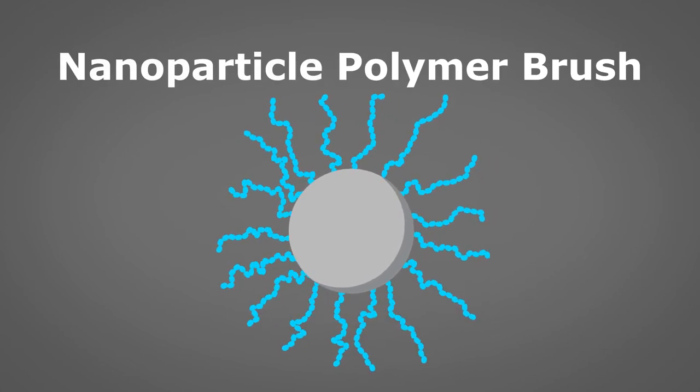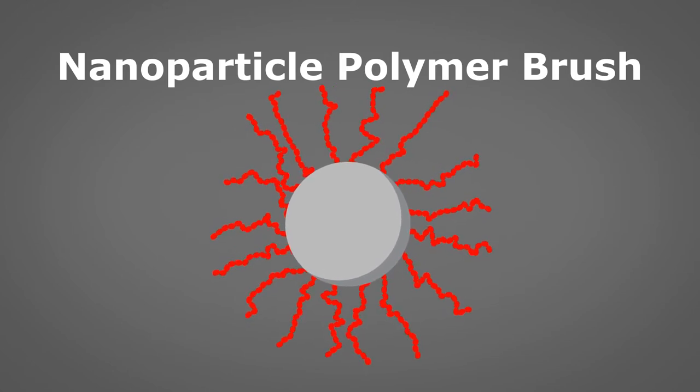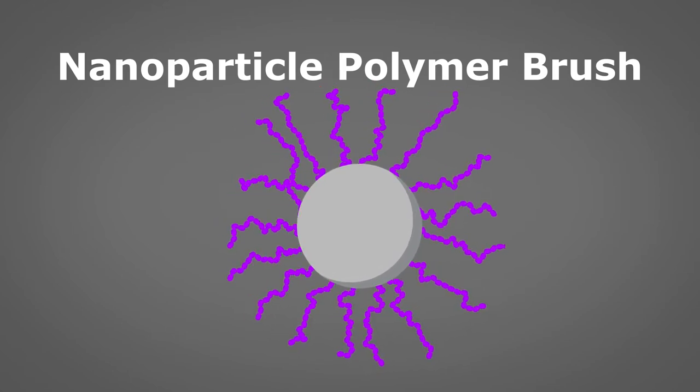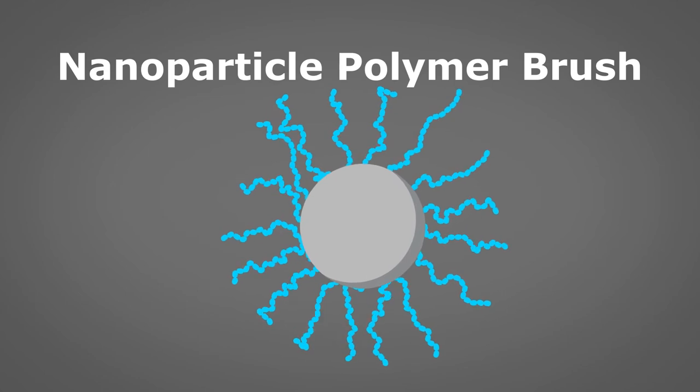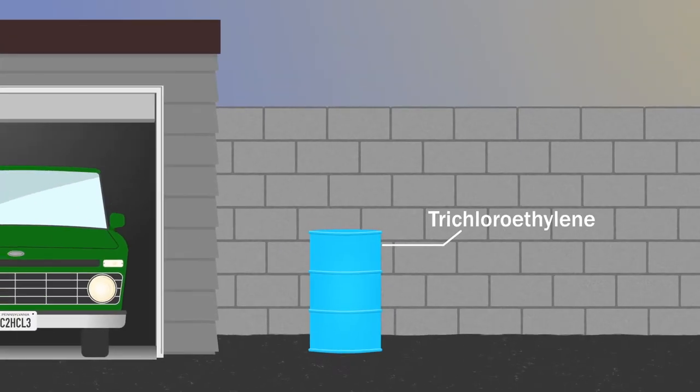The first application I want to talk about today concerns a problem in the remediation of groundwater pollution by chlorinated solvents such as trichloroethylene. The solvent used to be used to clean engine parts. It was very good, but if it was spilled, the solvent is denser than water so it tends to migrate down through the groundwater and accumulate in underground pools.